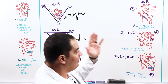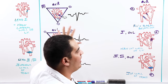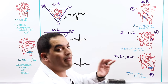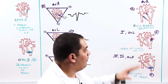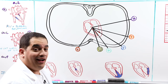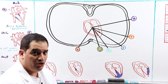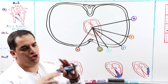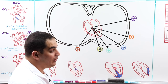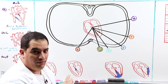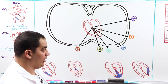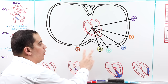Now that we have limb leads and augmented unipolar limb leads covered, we know that all limb leads except AVR have upright waveforms, and we appreciate what portions of the heart those leads tell us about. Let's now do the same thing for the precordial leads — V1 through V6. These are unipolar leads with only one positive electrode placed at different positions on the chest, and they are probably the most important leads for identifying pathology.